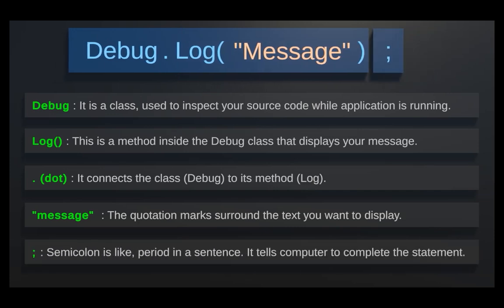Then we end the statement with a semicolon to signal that the line of code is complete. Here's a quick breakdown: Debug — a Unity class used for debugging. The dot connects the class Debug to its method Log. Log — a method that prints messages to the console. Message — the message inside the quotation marks gets displayed. Semicolon — marks the end of the statement. Remember to always put a semicolon at the end of each statement. It's like the period at the end of a sentence in coding.